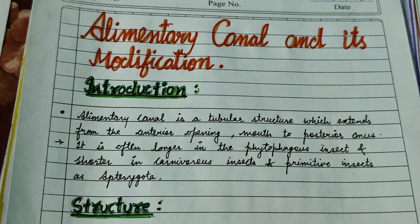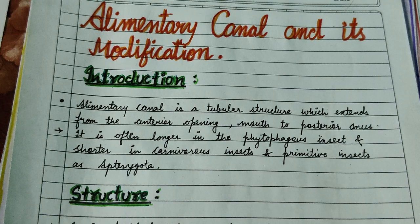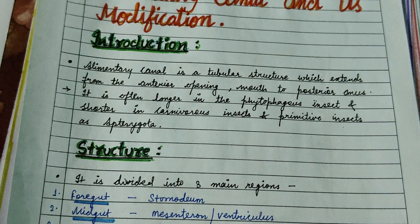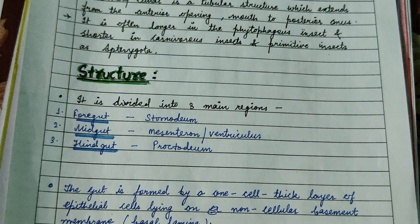Hi everyone, this video is for the special paper on entomology of semester 4. Here we are discussing the alimentary canal and its modifications in insects or arthropods. The alimentary canal is a tubular form which starts from the mouth and ends with the anus.